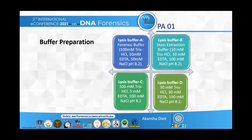Four types of lysis buffer were prepared by mixing chemical reagents at different concentrations: Lysis Buffer A, which is the forensic buffer generally used in CDFD; Lysis Buffer B, the stain extraction buffer used according to the research paper of Timken et al.; and Lysis Buffer C and Lysis Buffer D.